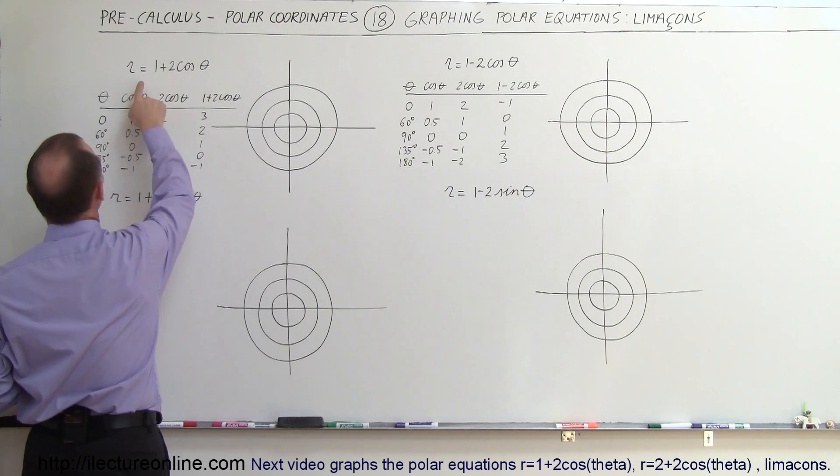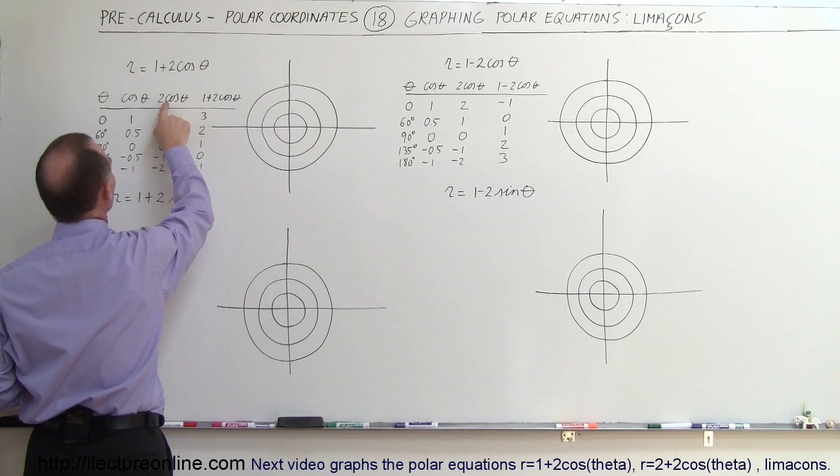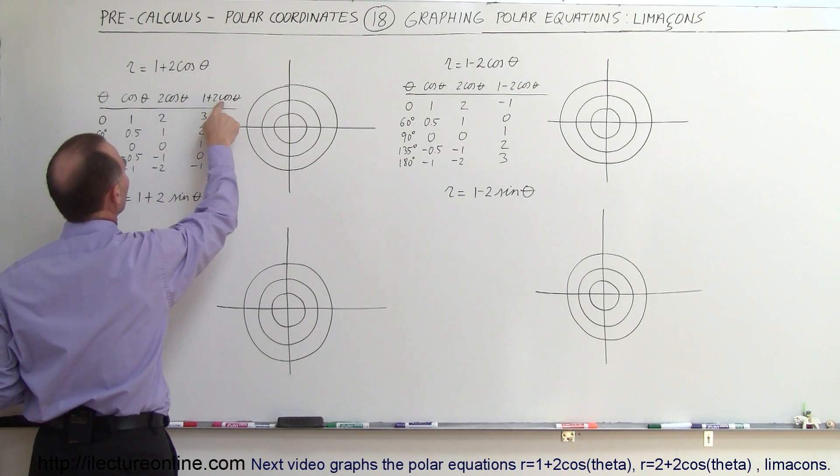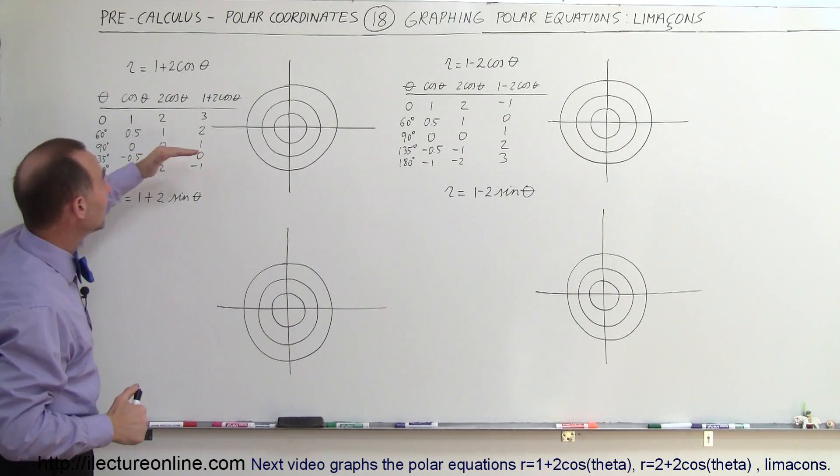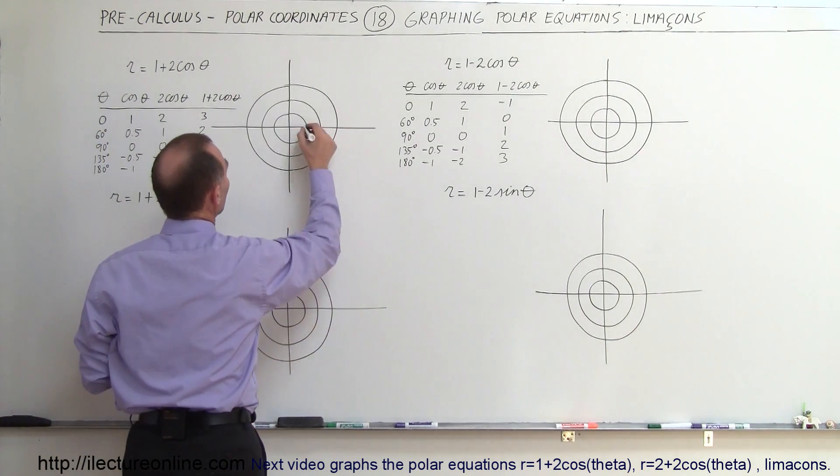So we can see that in the case of theta being 0, the cosine of theta is 1, twice the cosine of theta is 2, and 1 plus 2 times the cosine of theta is 3, so then we know that for an angle of 0 degrees, the distance from the origin is 3. 1, 2, 3, so we have a point right there.